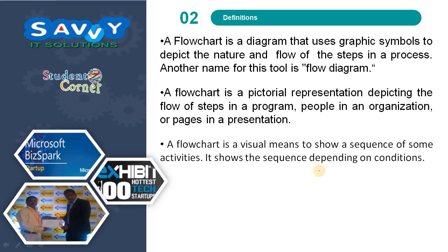A flowchart is a diagram that uses graphic symbols to depict the nature and flow of the steps in a process. Another name for this tool is flow diagram. A flowchart is a pictorial representation depicting the flow of steps in a program, people in an organization, or pages in a presentation.